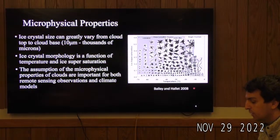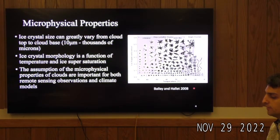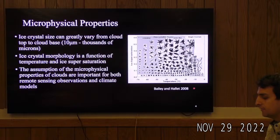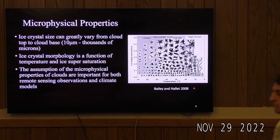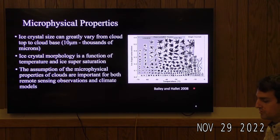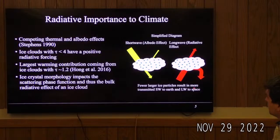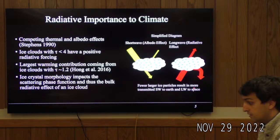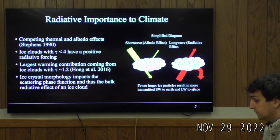Even within a cloud, ice crystal size can vary greatly—from the cloud top being on the order of thousands of microns to the cloud base being around 10 microns. The assumption of the macro-physical properties of clouds is important for both remote sensing observations and climate models. Ice clouds are very important to climate due to their radiative processes—they have competing thermal and albedo effects.